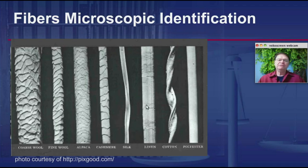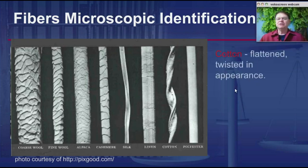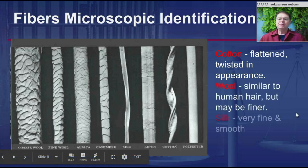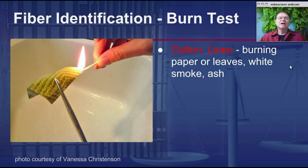Linen is a natural carbohydrate fiber that comes from flax plants and has been used for several millennia in making garments. Cotton appears almost like a flat ribbon that gets twisted under the microscope, making it very easy to recognize. Polyester, one of the most common filaments, is very smooth and uniform — being a synthetic filament, it is extruded through that machine. Keep in mind: cotton is flattened and twisted; wool is similar to human hair but may be finer; silk is very fine and smooth.